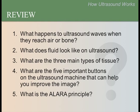Questions for review. Please pause the video now to review these questions and answers. What happens to ultrasound waves when they reach air or bone? They are reflected. What does fluid look like on ultrasound? It looks black. What are the three main types of tissue? Complex, cystic, and solid. What are the five important buttons on the ultrasound machine that can help you improve the image? Gain, time gain compensation, depth, focus, and zoom. What is the ALARA principle? The ALARA principle states that we should scan a fetus only when there is a medical reason and that we limit the ultrasound exposure during those scans.